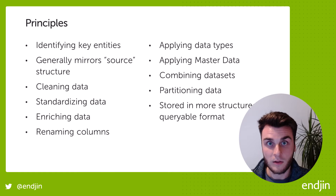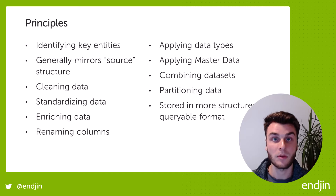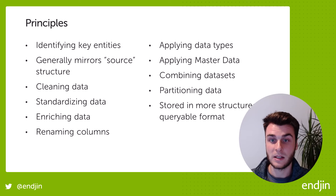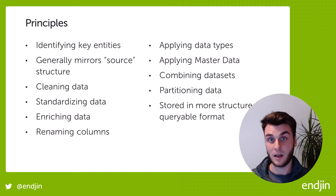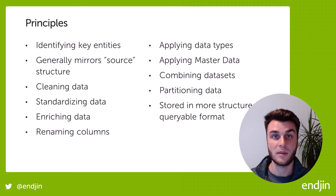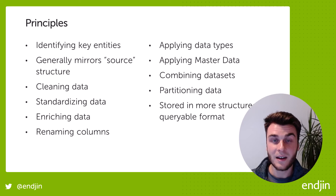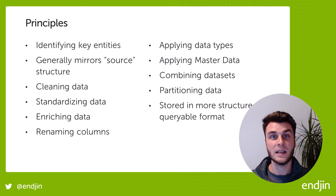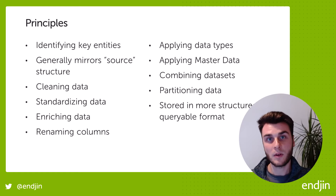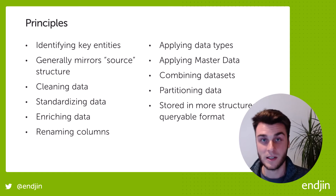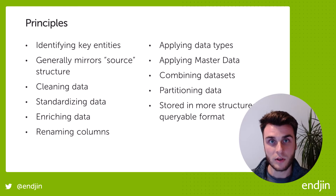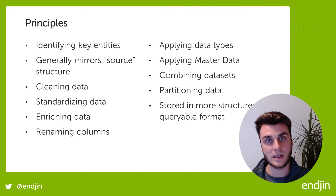The principles of the silver layer: we want to identify our key entities — in our case, the postcode directory and the price paid entity. This generally mirrors the source data. In the silver zone, we're also cleaning the data — removing error values or replacing values that represent null with actual null values. We're standardizing the data, for example the schema: changing column names, applying data types, such that the same logical column from one data source is called the same thing as the same logical column from a different data source. That way, downstream when we project to gold, we're working from a known set of fields and tables, and we can pick and choose what we want from each data source for our gold projections.